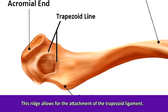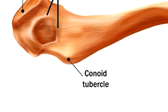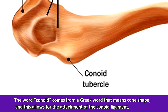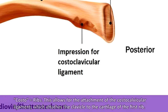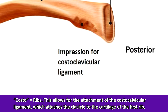You'll notice the trapezoid line right here, which is a ridge that allows for the attachment of the trapezoid ligament. We also have the conoid tubercle — the word conoid comes from a Greek word meaning 'cone shape' — and this allows for the attachment of the conoid ligament. Toward the medial end of the clavicle, we have an impression called the impression for the costoclavicular ligament. The prefix 'costo' refers to the ribs, and this impression allows for the attachment of the costoclavicular ligament, which attaches the clavicle bone to the cartilage of the first rib.